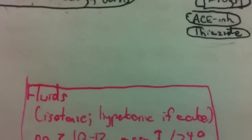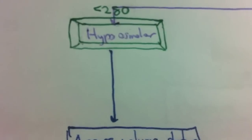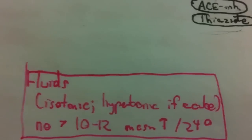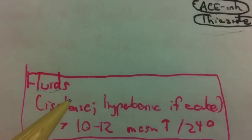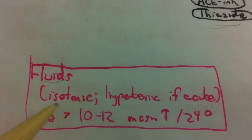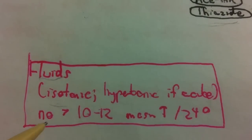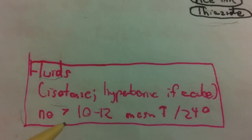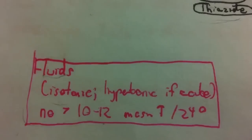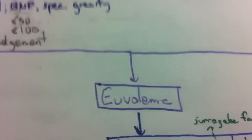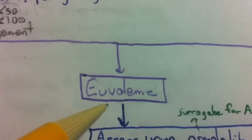So how do you treat hypoosmolar hypovolemic hyponatremia? You treat it by giving fluids — usually isotonic fluids. Only in an acute setting would you give hypertonic fluids. You are trying to replace the lost fluids and the salt. We'll come back to general principles of treatment.